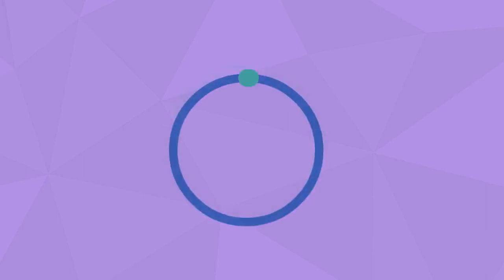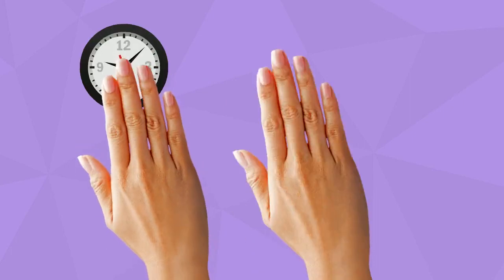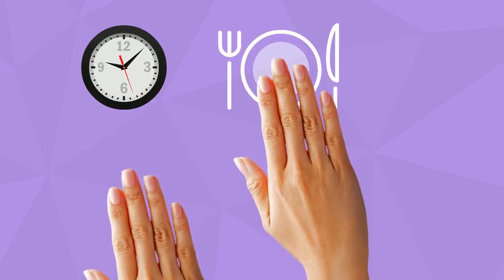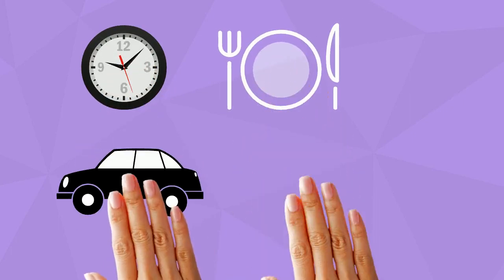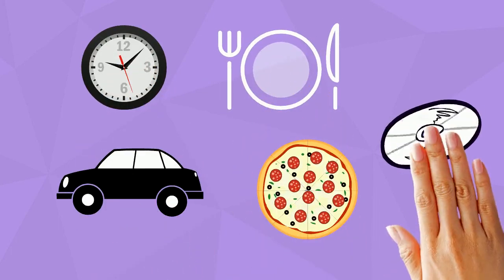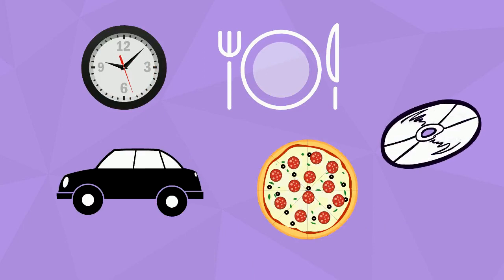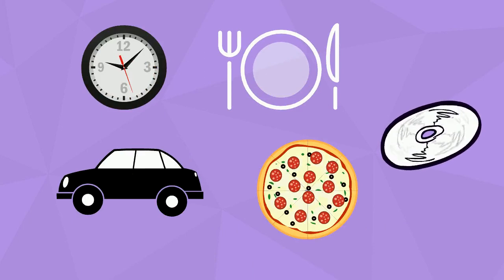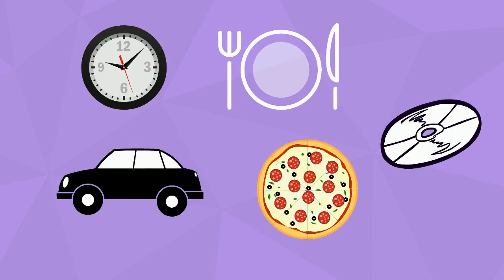There are many things around us that have a circle or round shape. For example, the clock, the plate, the wheel in the car, the pizza, and the disc.